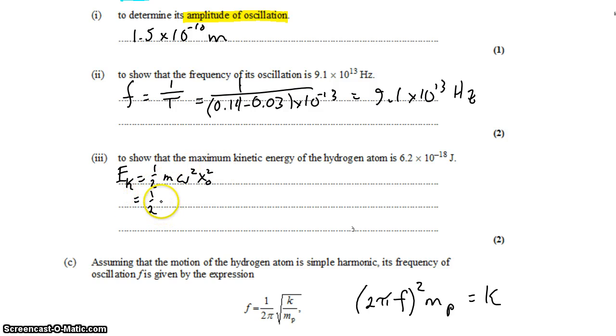We don't know the angular frequency, but the angular frequency is very closely related to the regular frequency. So we can write this as m times 2 pi f squared. So 2 pi f is the angular frequency, f being the regular frequency, times x0 squared.